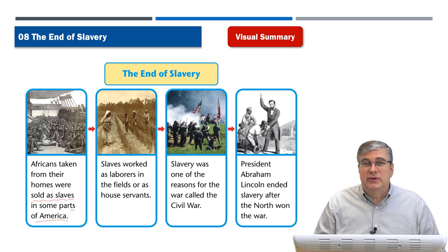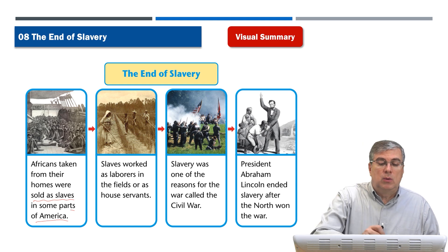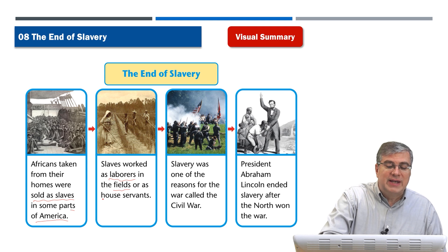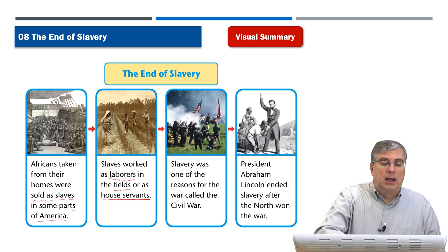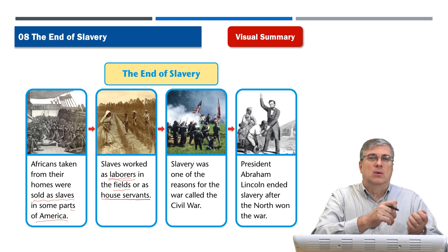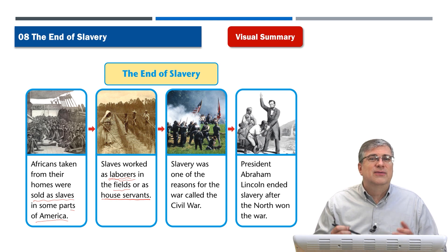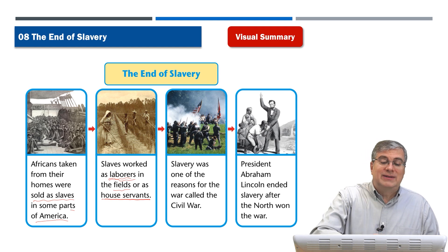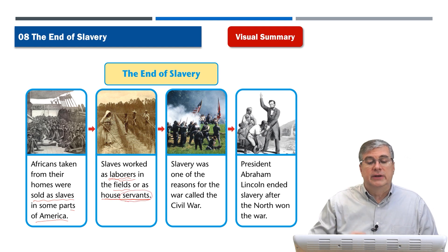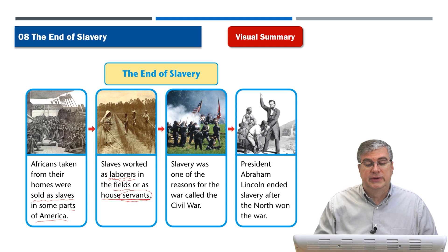When slaves came to the New World — which was what America and that area was called — slaves worked as laborers in the fields or as house servants. A laborer is somebody who works hard doing very physical jobs like digging, raking, or picking crops. In the fields it's very hot, terrible, dirty, and very physically demanding work. Or they worked as house servants serving the masters of the plantation — the rich people who owned the farms.